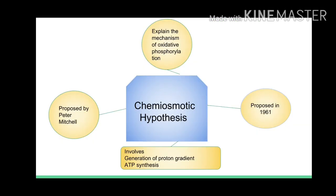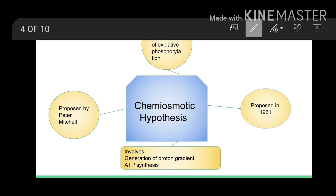This is a basic introduction in the form of a flow diagram for the chemiosmotic hypothesis. It was proposed by Peter Mitchell in 1961. It explains the mechanism of oxidative phosphorylation — it tells us how oxidative phosphorylation works. We will study the chemiosmotic hypothesis under two headings: generation of proton gradient and ATP synthesis.